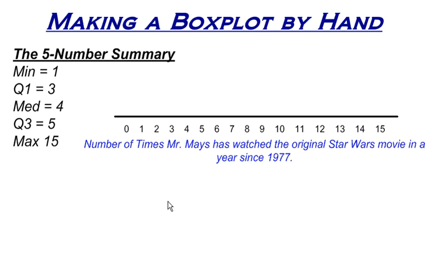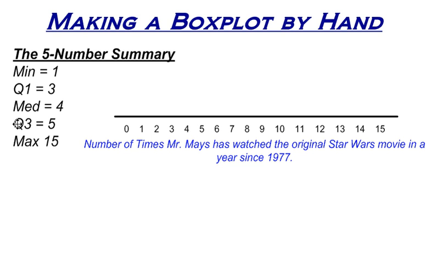So how can the five-number summary be used? In our previous video, we talked about the five-number summary and how to find it. You can see the five-number summary from the data set we've been using for this series of videos: the minimum is 1, first quartile is 3, the median or second quartile is 4, the third quartile is 5, and the maximum is 15. But how can we use it?